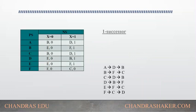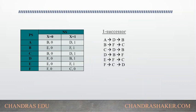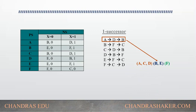Next we check the 1-successor for 2-distinguishability. State a points to d, and d points to b. We check whether each next state belongs to the same partition as before. State a points to b, which belongs to partition {b, e}. State c also points to b, which belongs to the same partition. However, state d — which was in the {a, c, d} partition — points to f, which is a different partition.